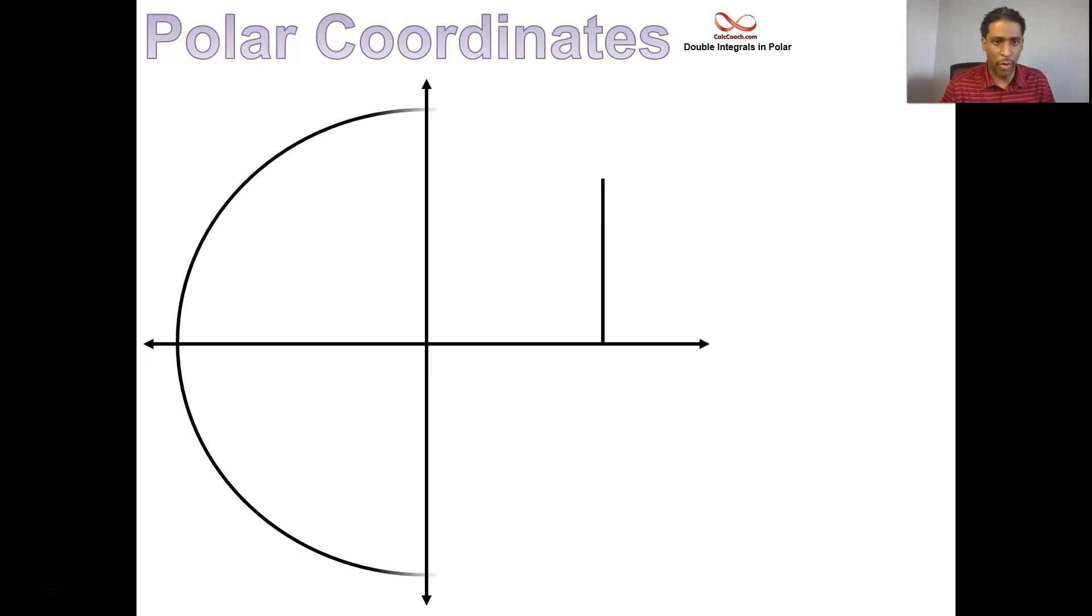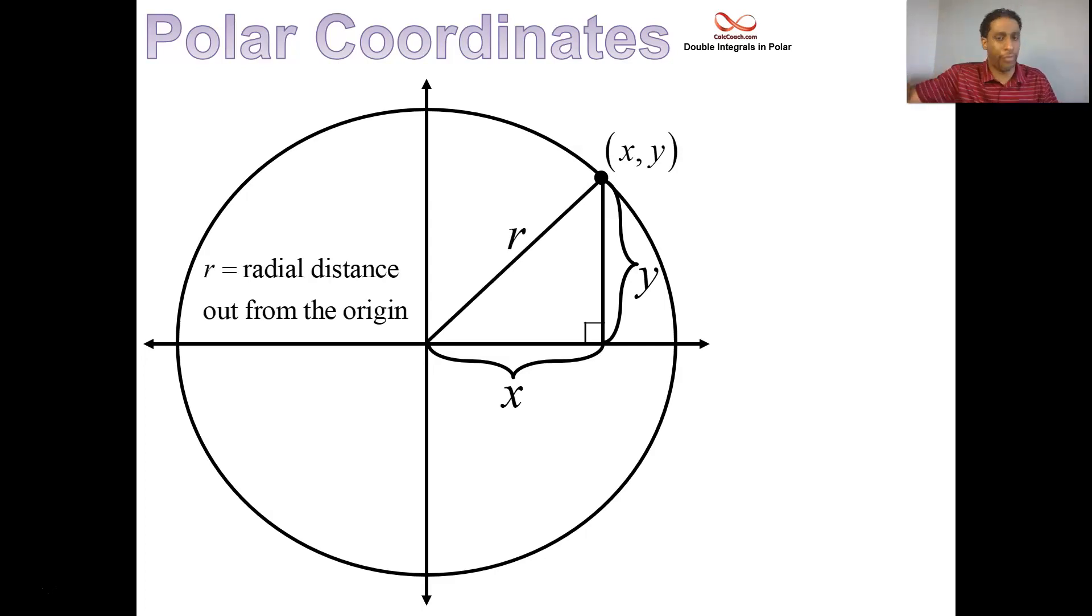Just a quick review of polar coordinates. So we're going to have a point in the XY plane and that point has coordinates X and Y. The distance you move horizontally is X. The distance you move vertically is Y. And what we're going to do is connect that point to the origin and call that distance R. That'll be the radial distance out from the origin. It makes a right triangle. There's an angle that's made at the base there at the origin.